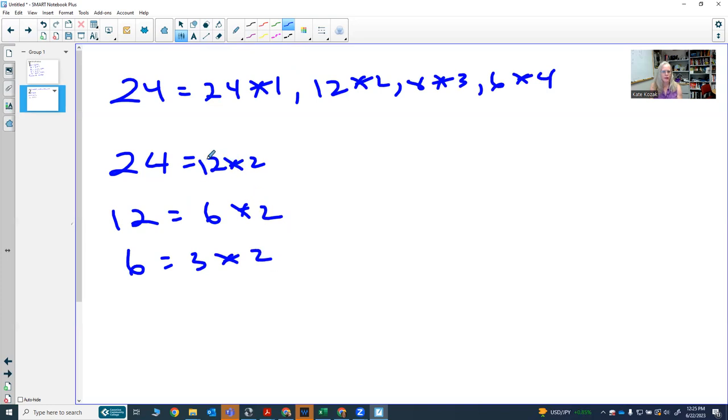So now I notice I have 2, 2, 3, and 2. Those are all prime numbers. So that means 24 can be written as 2 times 2 times 2 times 3. Since these are all prime numbers, this is known as the prime factorization.